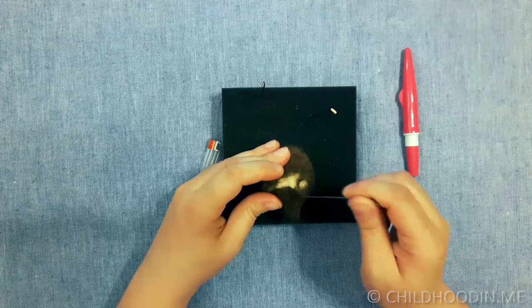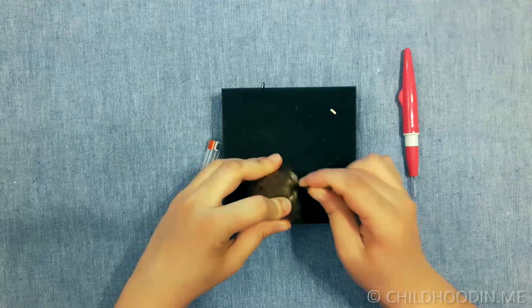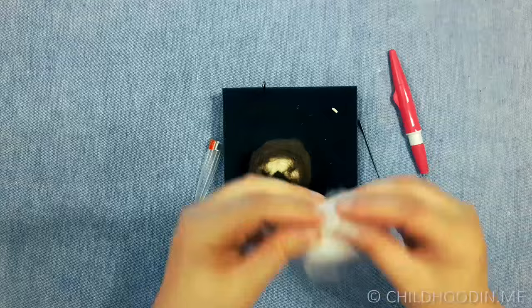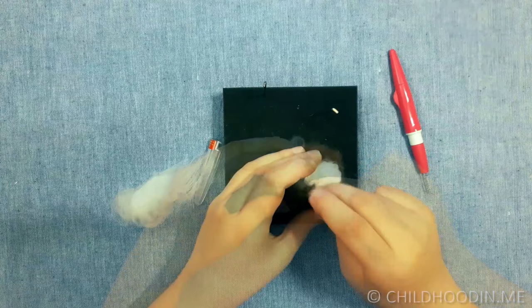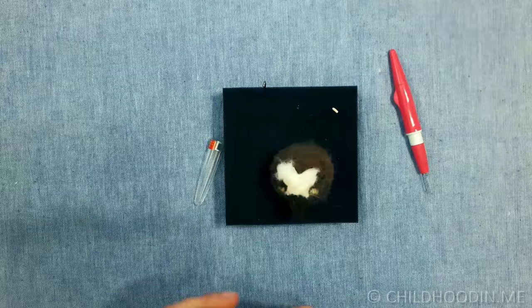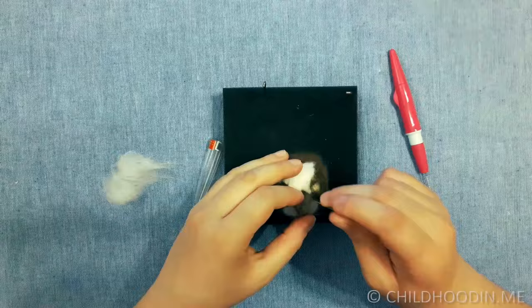Attach the beak to the head. Before attaching it, you can clearly mark the spots for the eyes to center the beak. Add some white roving between the eyes. Also add some below the beak. You can polish and decorate the head to your liking.